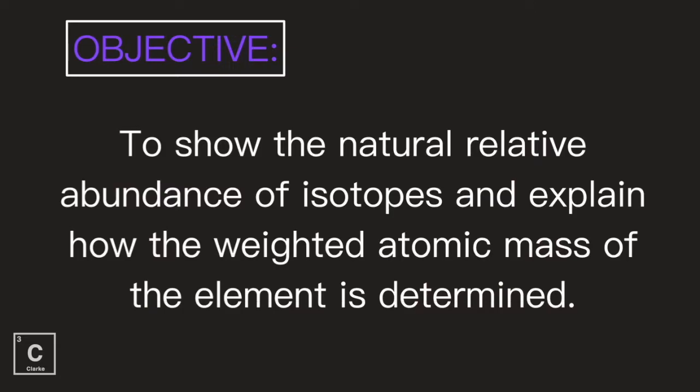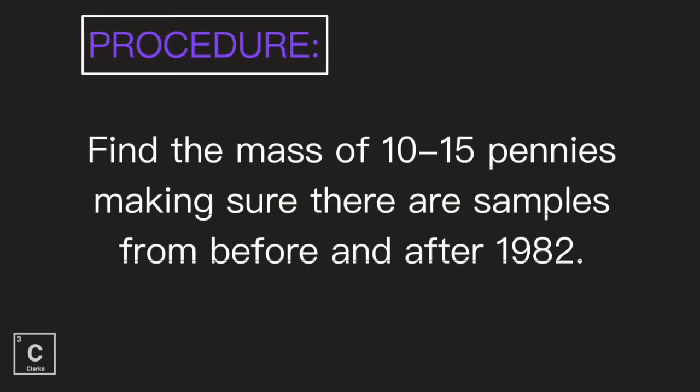Our objective in this lab is to show the natural relative abundance. Remember that's the percent that shows us how common or rare different forms of the isotope are. We're going to explain how the weighted atomic mass of the element is determined. Remember, we use that percent as our weight. This is a weighted average and the average has to be weighted based on the relative abundance.